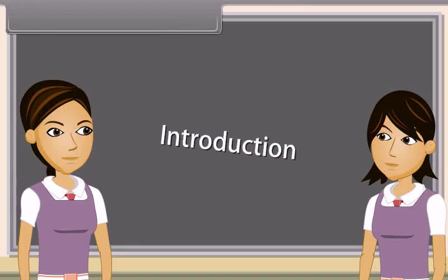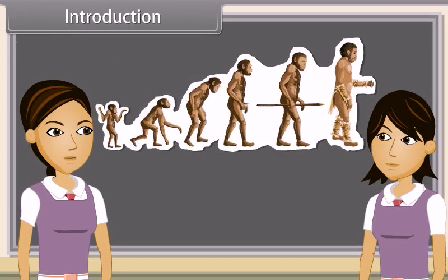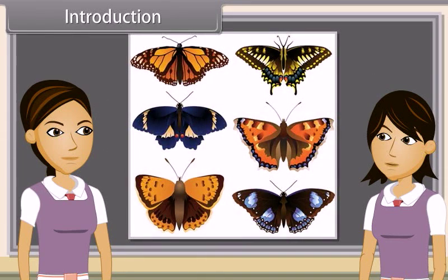Evolution is any change across successive generations in the heritable characteristics of biological populations. Variations are the structural, functional, or behavioral changes from the normal characters developed in living organisms.